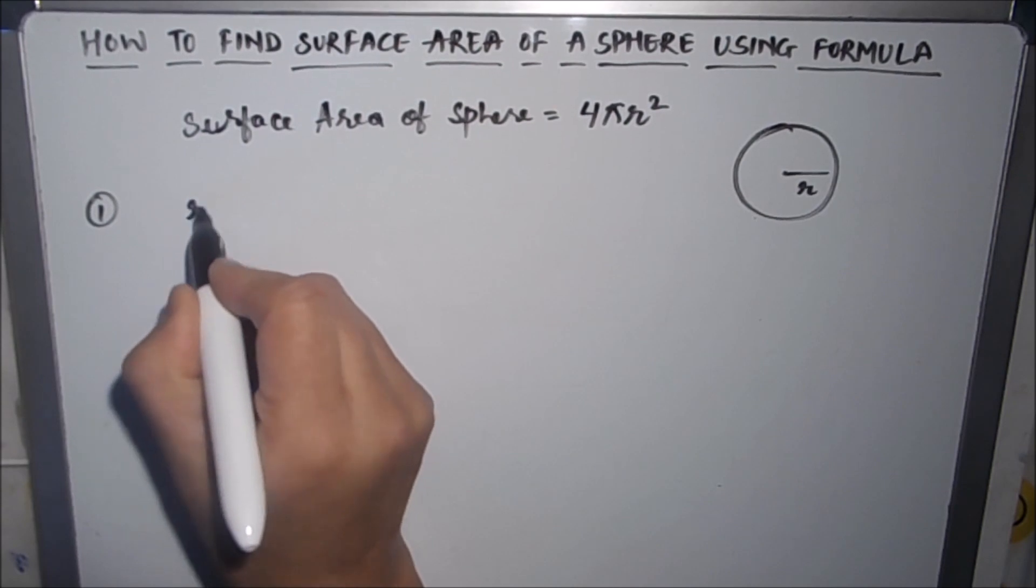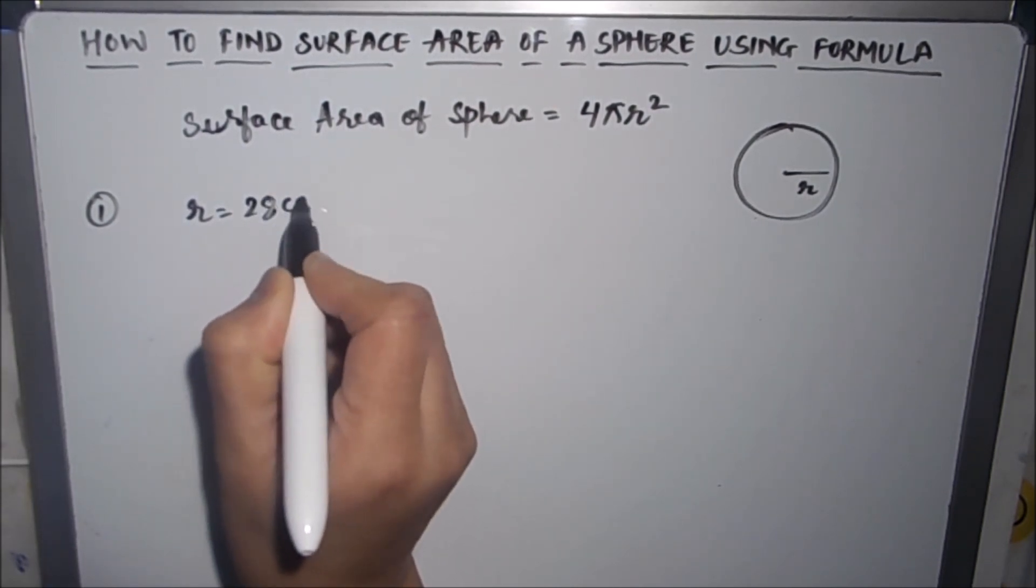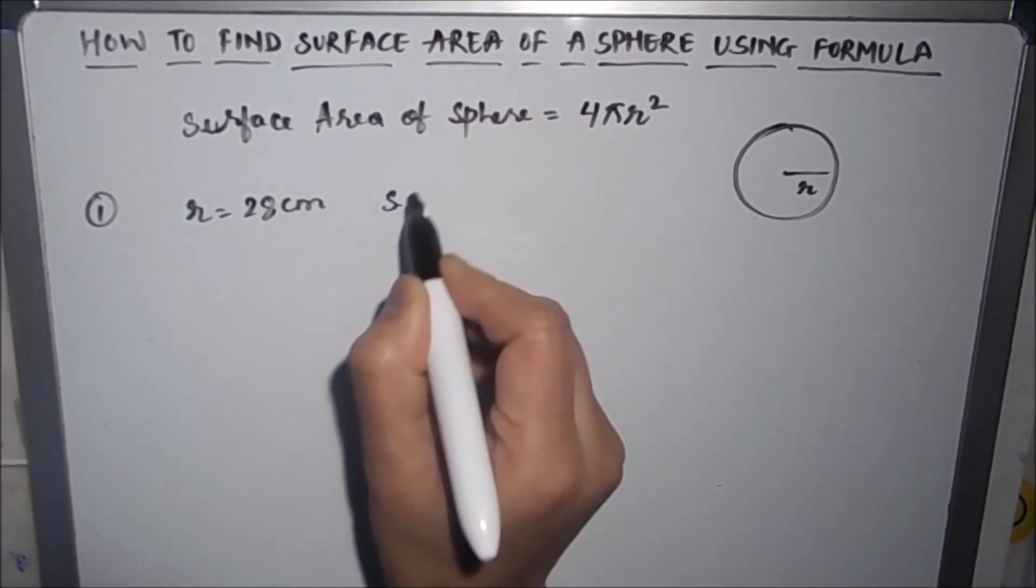If we have a question where r, or the radius of the sphere, is given as 28 centimeters and we need to find the surface area...